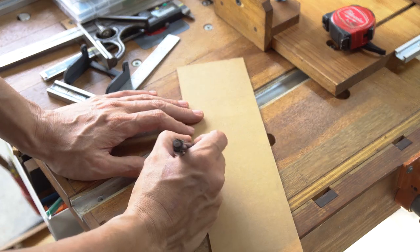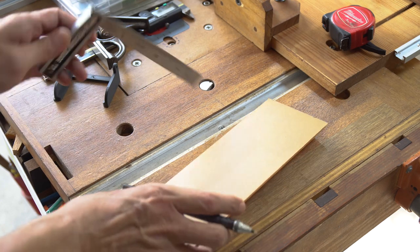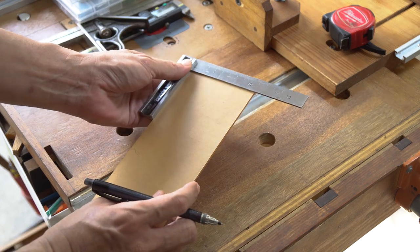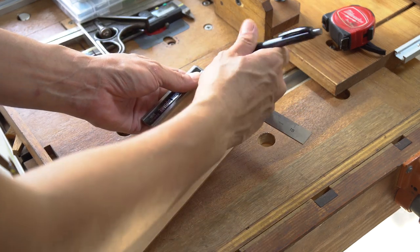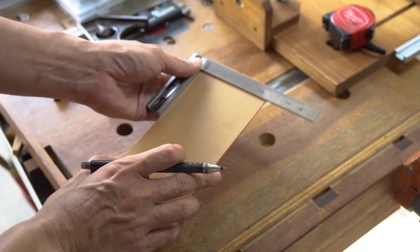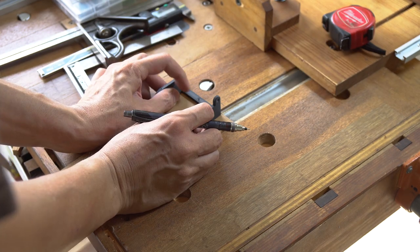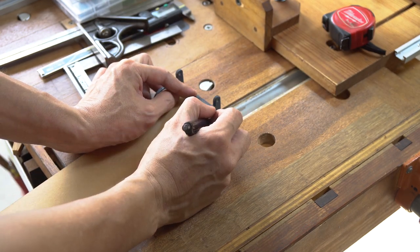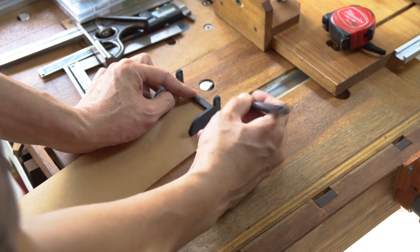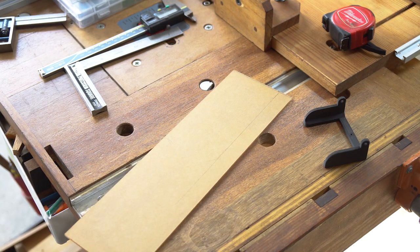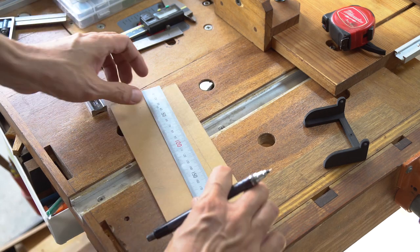We will start by cutting the transparent acrylic to the appropriate size. I'm using the hinge as a guide to determine the width of the blade guard, and the length will be around 150 millimeters.